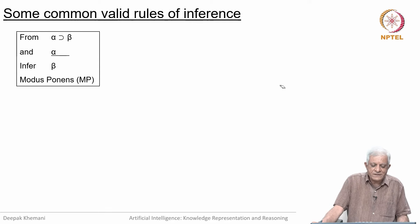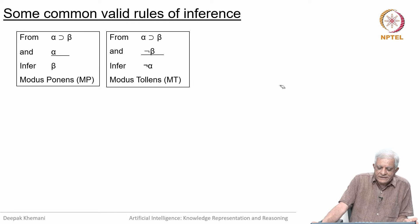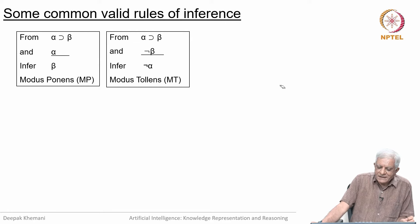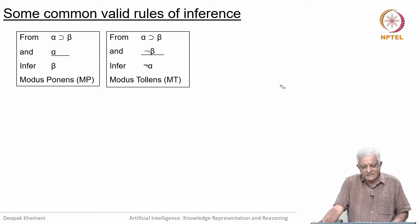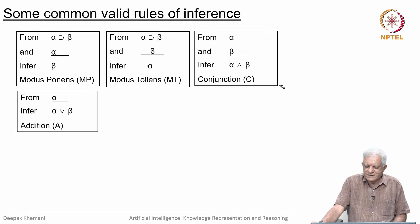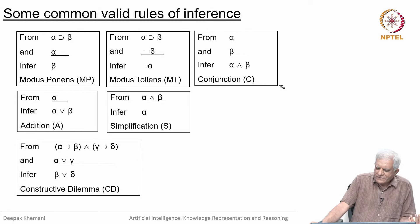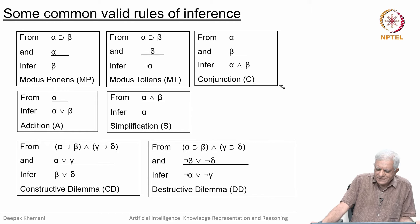We have already seen modus ponens: alpha implies beta, and alpha gives you beta. The converse in some sense is called modus tollens. It says alpha implies beta, and if you give us not-beta, then not-alpha is a valid rule of inference. I would encourage you to construct the truth table for this and see that it will be a tautology. Then conjunction is a simple rule which says that if alpha is true and beta is true, then alpha-and-beta must be true.